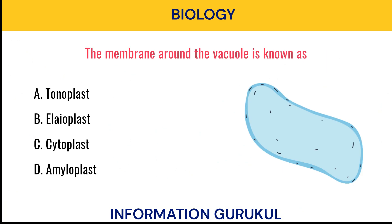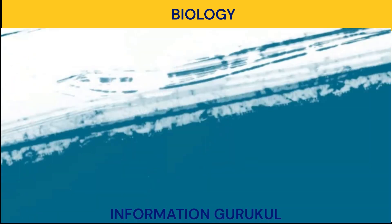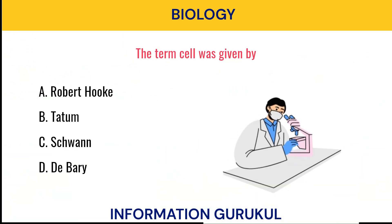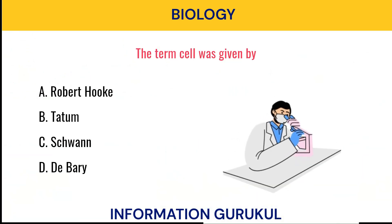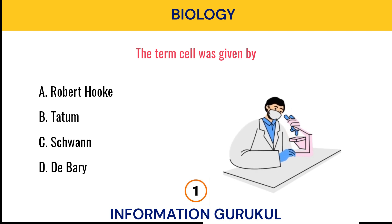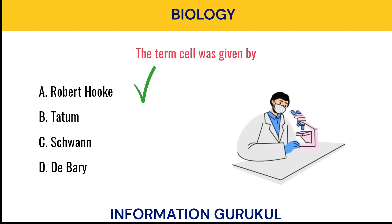The membrane around the vacuole is known as? Tonoplast. The term cell was given by? Robert Hooke.